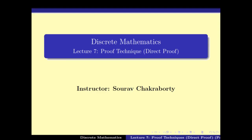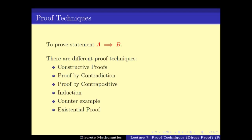Welcome to the seventh video lecture in this discrete mathematics course. In this video we will continue with our study of proof techniques. We will look at some of the problems and some new techniques of solving them. So far we have seen that a theorem can be represented as A implies B, where A is a set of assumptions and B is the deduction.